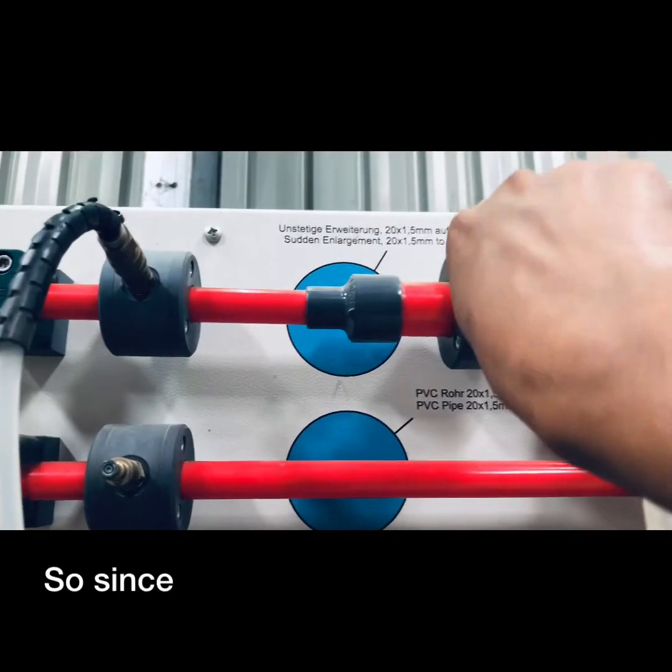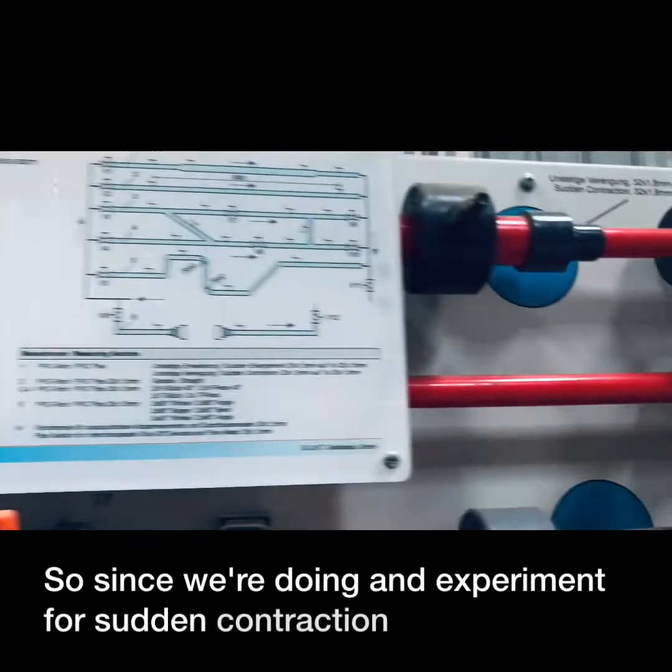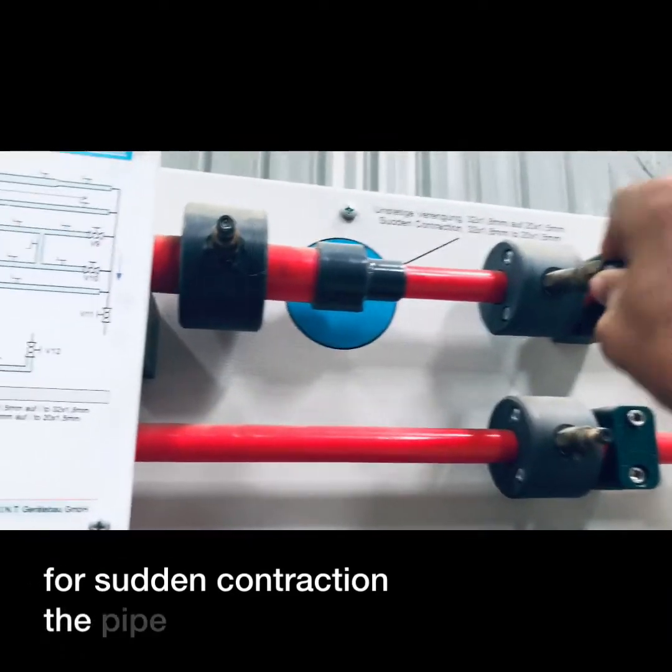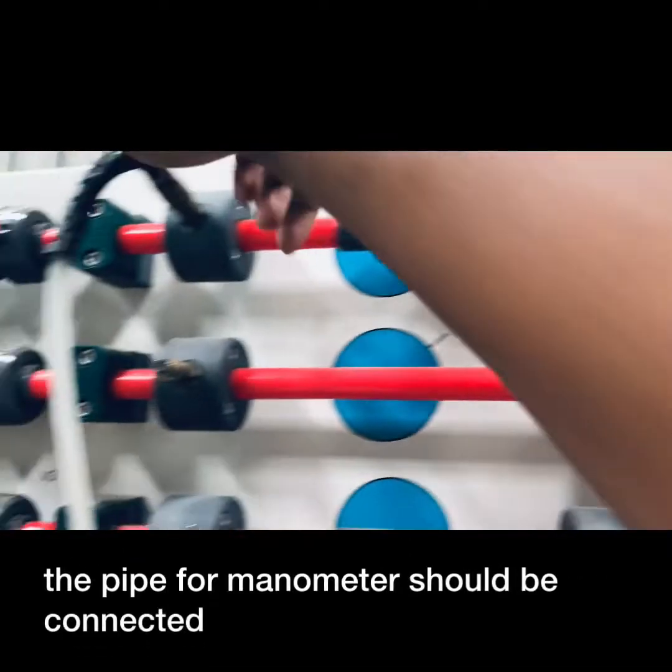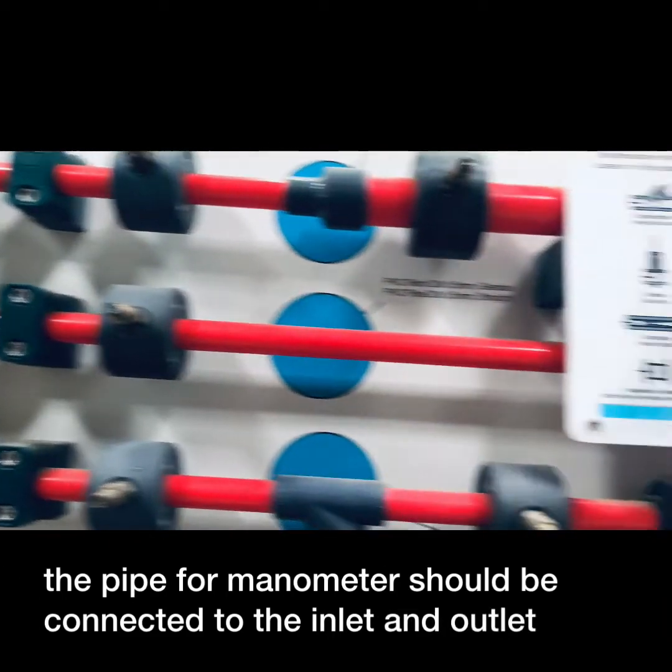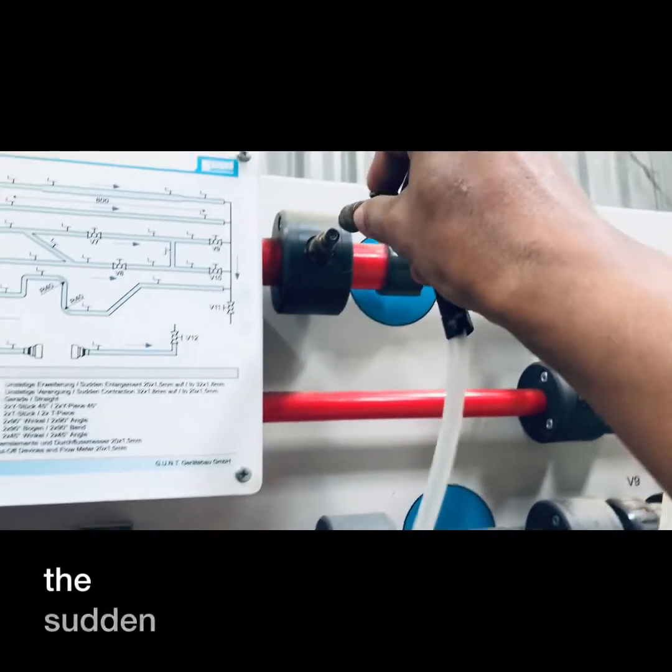Since we are doing an experiment for sudden contraction, the pipe for the manometer should be connected to the inlet and outlet of the sudden contraction pipe.